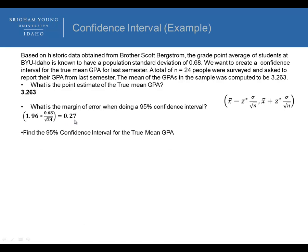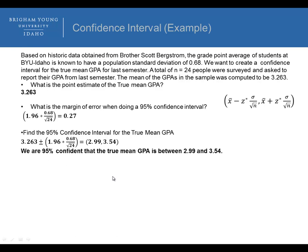To find the 95% confidence interval for the true mean GPA, we take our point estimate plus or minus our margin of error, giving us a lower bound of 2.99 and an upper bound of 3.54. Therefore, we are 95% confident that the true mean GPA is between 2.99 and 3.54.